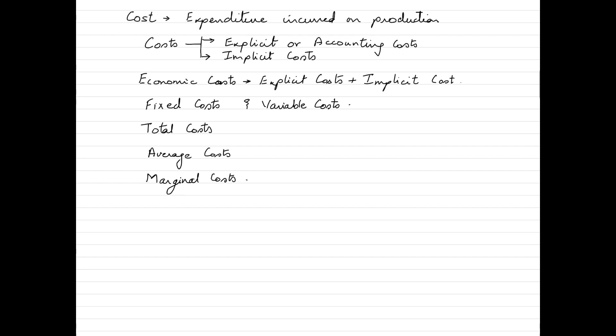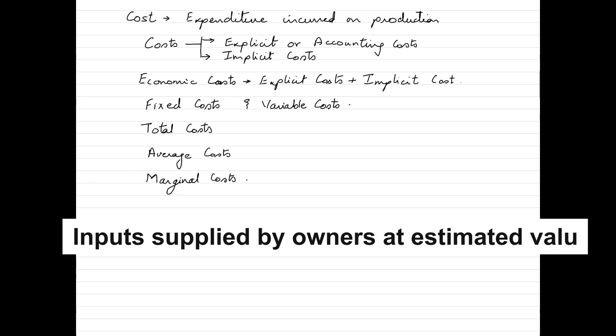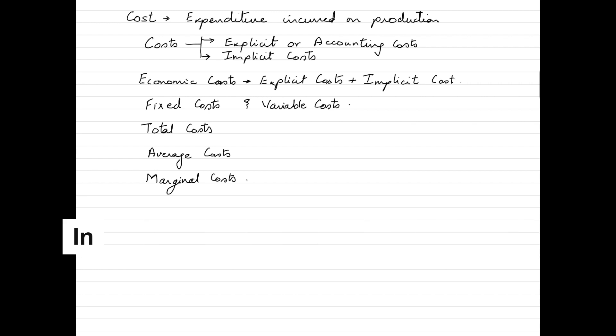The second type of cost is implicit cost. When we talk about implicit cost, these are the estimated values of the inputs that are supplied by the owners including normal profit. Implicit costs in simple terms could be treated as opportunity costs that arise from the use of resources owned by the firm which are not explicitly paid for. We can say that it represents the value of resources that are employed in the business that could have been used elsewhere.